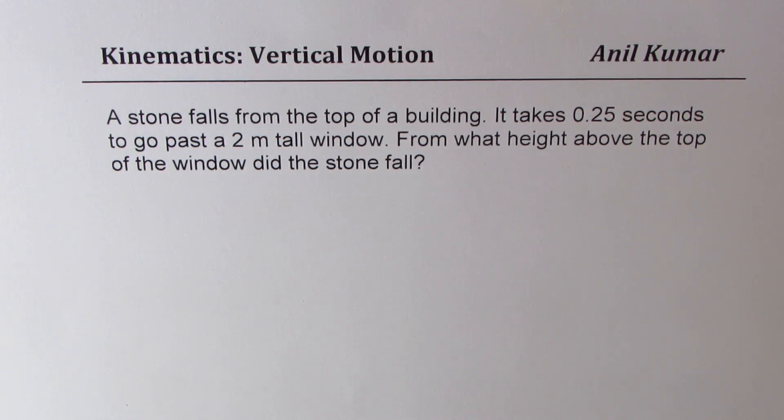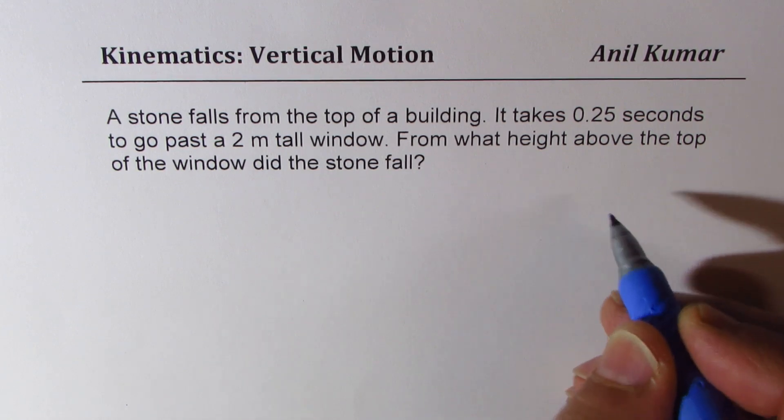A stone falls from the top of a building. It takes 0.25 seconds to go past a two meter tall window. From what height above the top of the window did the stone fall?